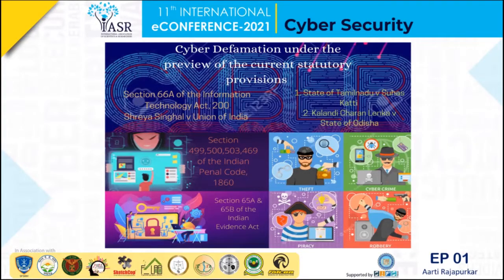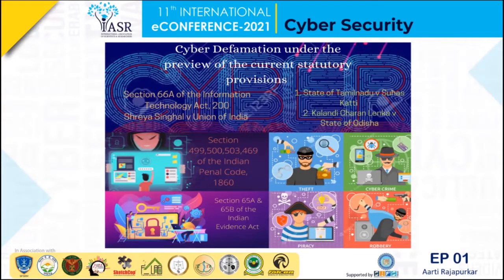In the case of State of Tamil Nadu versus Suhas Katti, a woman complained to the police about a man who was sending her obscene, defamatory, and menacing messages in a Yahoo message group. The accused also forwarded emails received in a fake account which had been opened in the victim's name.